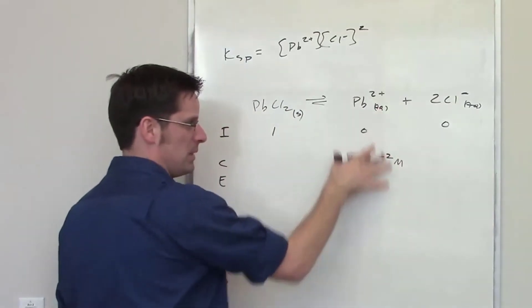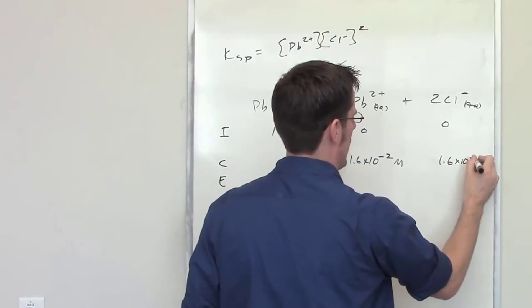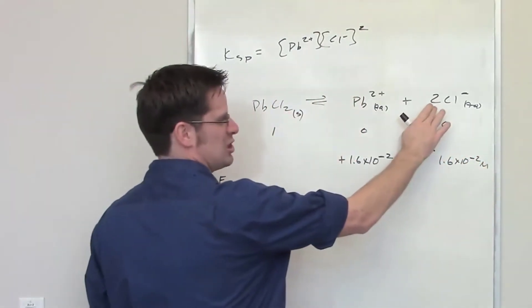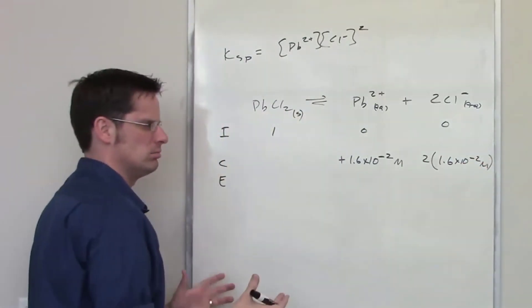That is the molar solubility for lead, and it's also the molar solubility for chloride. However, because chloride has two molar equivalents of it in front of it, I have to go ahead and put a 2.